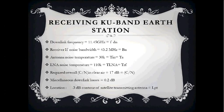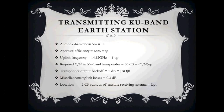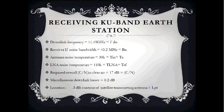For the receiving KU-band Earth station: downlink frequency is 11.45 GHz, receiver IF noise bandwidth is 43.2 MHz, antenna noise temperature is 30 K, low noise amplifier noise temperature is 110 K, required overall C/N in clear air is 17 dB, miscellaneous receiving losses are 0.2 dB, and location is on the −3 dB contour of the satellite transmitting antenna.